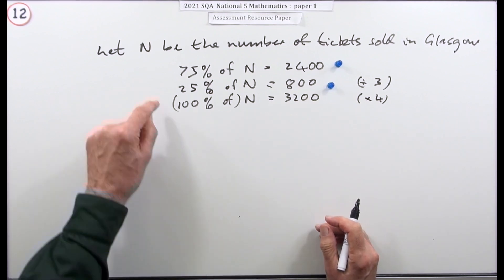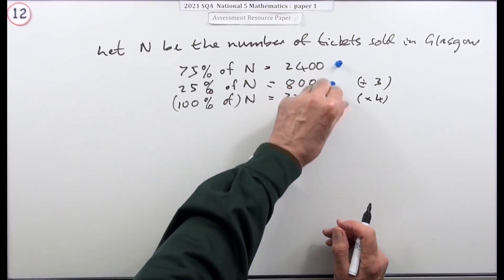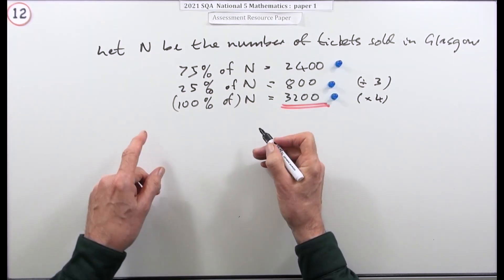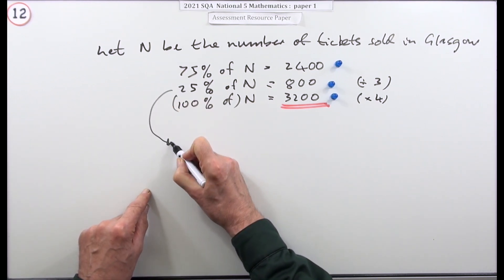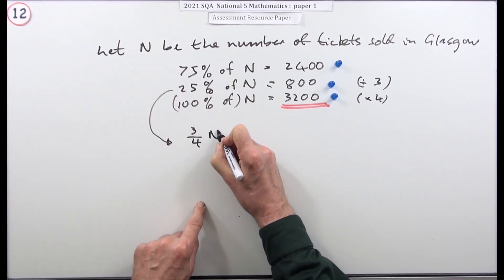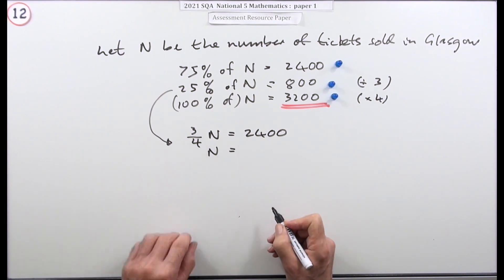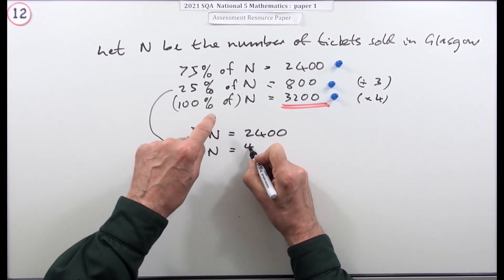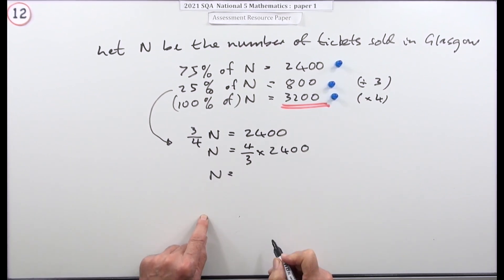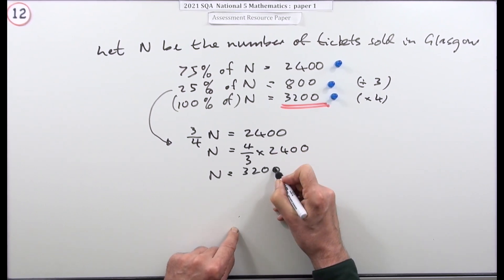One mark was for the technique used to get from the equation to the final answer; the other mark was for the answer itself. An alternative: reinterpret 75% as three quarters — so three quarters of N equals 2,400. Multiply both sides by four thirds: N equals four thirds times 2,400. Divide by 3 to get 800, multiply by 4, giving 3,200.